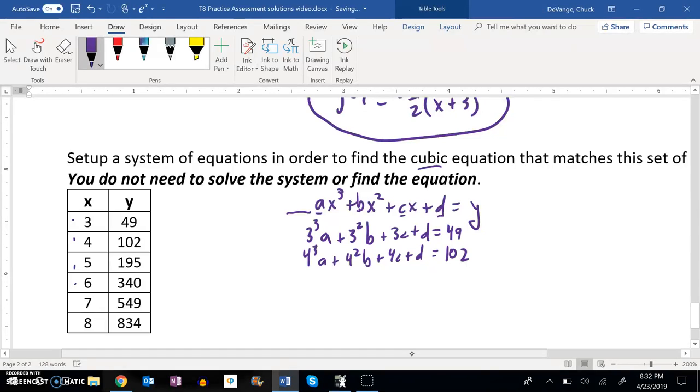5³. I'm just going to actually start evaluating these. 5³ is 125. So 125a plus 5², 25b, plus 5c plus d equals 195, which is associated with 5.